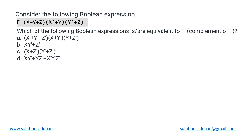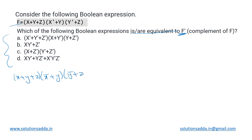This question is based on boolean algebra. We have been given a boolean expression f, and from the given options we need to determine which are equivalent to f complement. First, let's find out what f complement is and then check all the options one by one. f is given as (x + y + z) AND (x̄ + y)(ȳ + z). This is our f, so f complement will be this whole thing complemented.